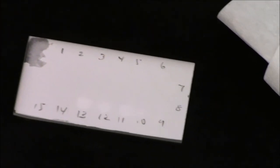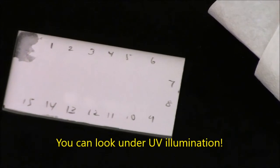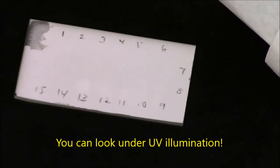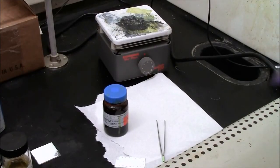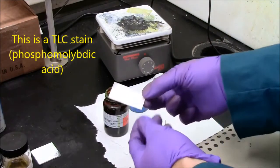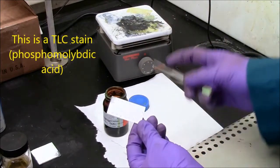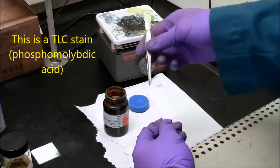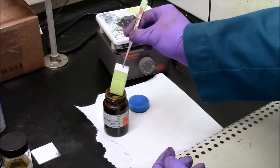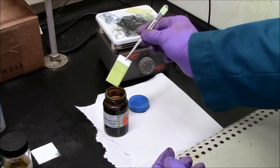I've spotted fractions one through thirteen on my plate here. If my molecule is UV active, all I need to do is look at this in the UV light and see is there anything in any of these tubes of interest. This is the plate on which I spotted thirteen fractions. I will now stain the plate and hope that I get useful information.